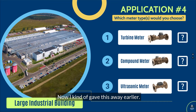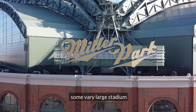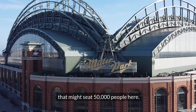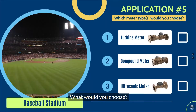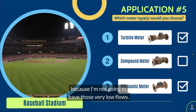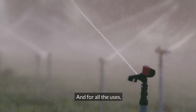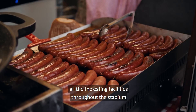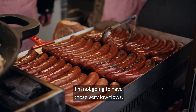Application number five — a baseball stadium, one of those large stadiums that might seat 50,000 people. I would probably choose a turbine or an ultrasonic meter because I'm not going to have those very low flows. I'm going to need very high flows for the irrigation of the field and for all the eating facilities throughout the stadium.